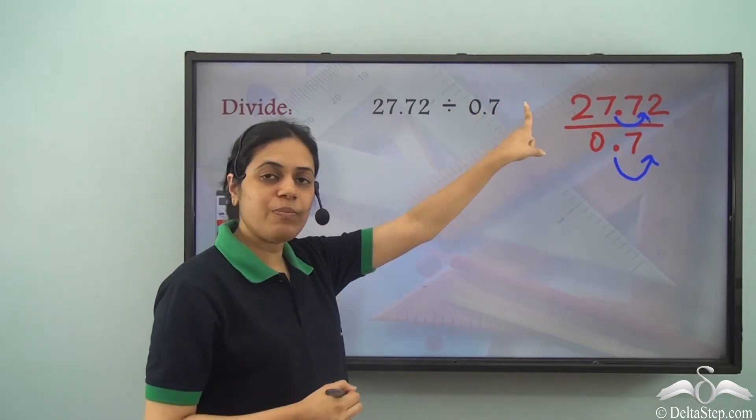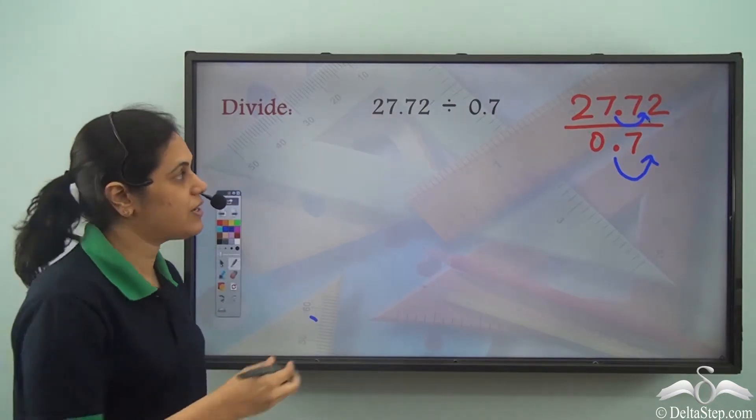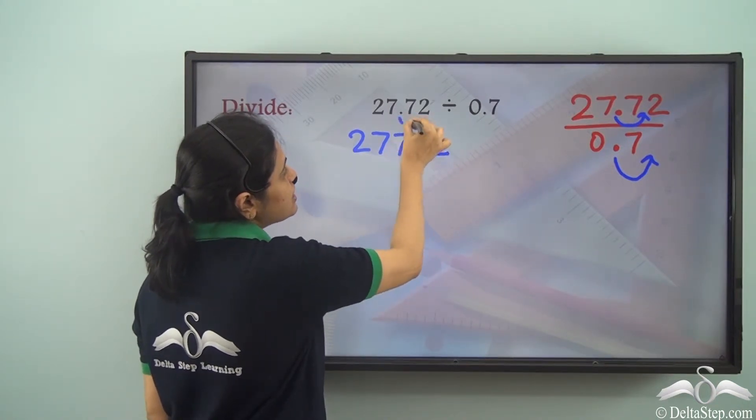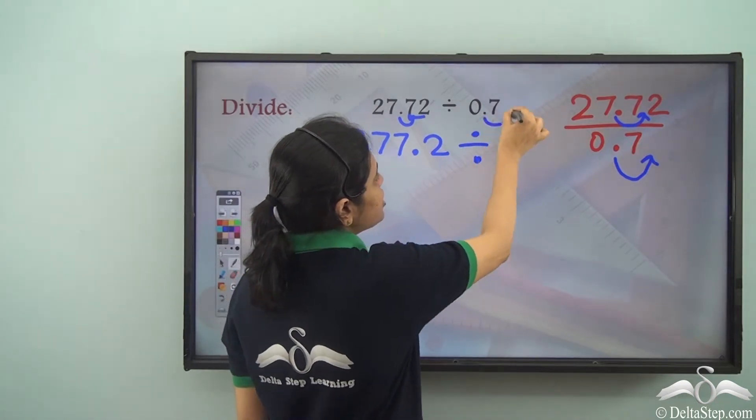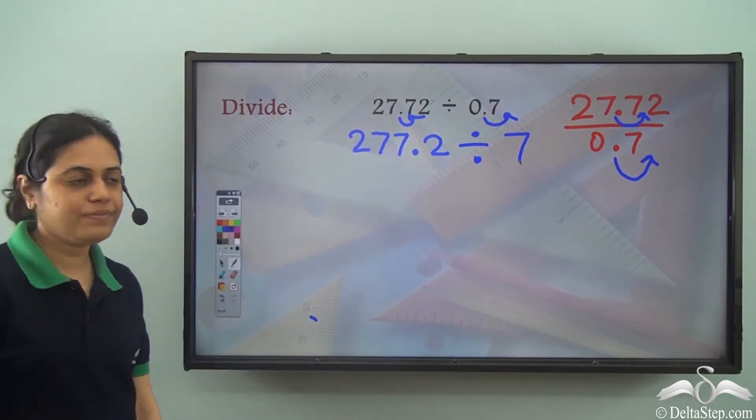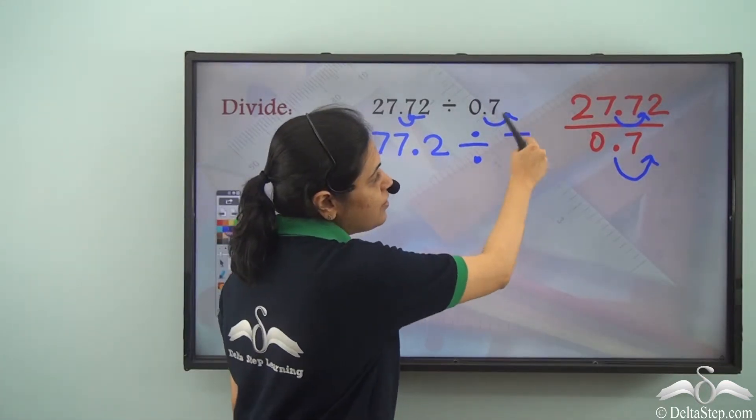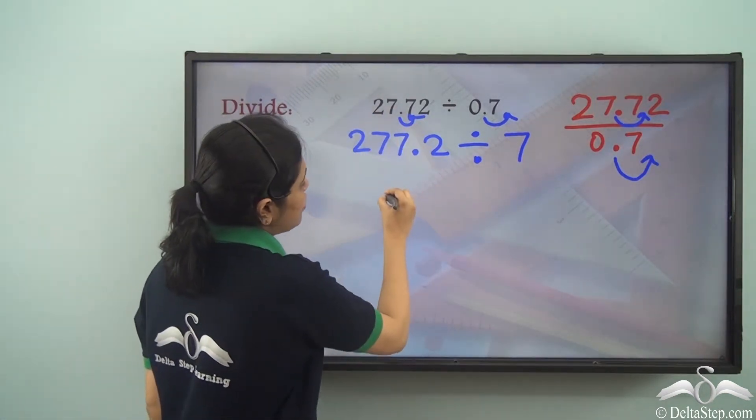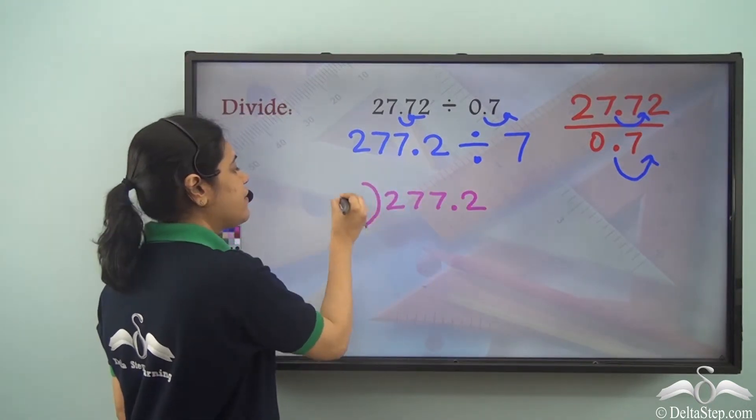So as I shift this decimal point to the right by one place, even this decimal point shifts to the right by one place and this becomes 277.2 because this now shifts by one place. And if this shifts by one place, it becomes 0.7 or I can write only 7. So now the divisor does not have a decimal point and the dividend has a decimal point. So I have 277.2 divided by 7.